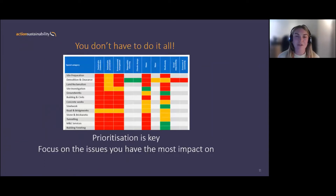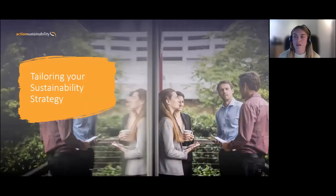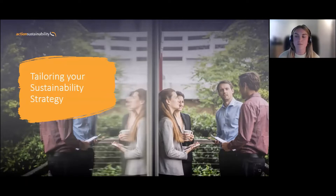The key thing here is that you don't have to do it all. When you've got 15 or 16 different sustainability topics, you can't focus on everything or you'll end up focusing on nothing. You need to prioritise and identify three or four key impacts that are relevant to you and focus on those first. This links into how everything we've spoken about connects to actually tailoring your specific strategy.